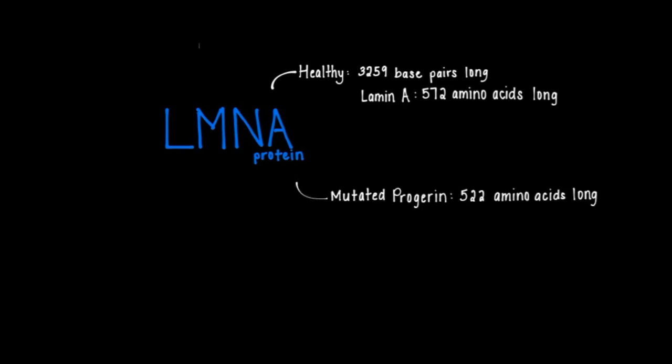The LMNA gene is 3,259 base pairs long. The healthy lamin A protein produced by it is 572 amino acids long, and the mutated progerin protein is 522 amino acids long.